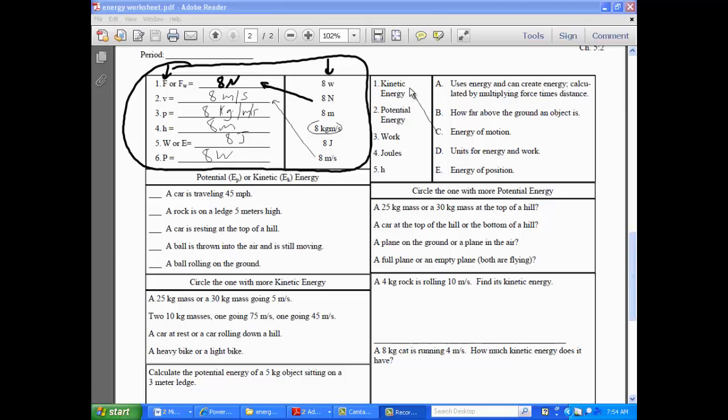Potential energy. Good. Energy of position. You got it. Work. Work. Nope. Work is A. Force times distance is A. Fantastic. Joules. D. And, finally, the last one. Height is how far above the ground an object is. All right. So that was just matching again. So, any questions on those two sections?